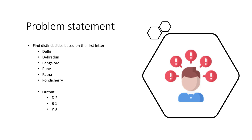Let's take a very simple example and walk through how Spark will render that program and prepare a DAG or a plan. The problem statement is: we want to find distinct cities based on the first letter. Given some city names, if the first letter is D, group those together and count them. The output would look like D is 2, B is 1, and P is 3.